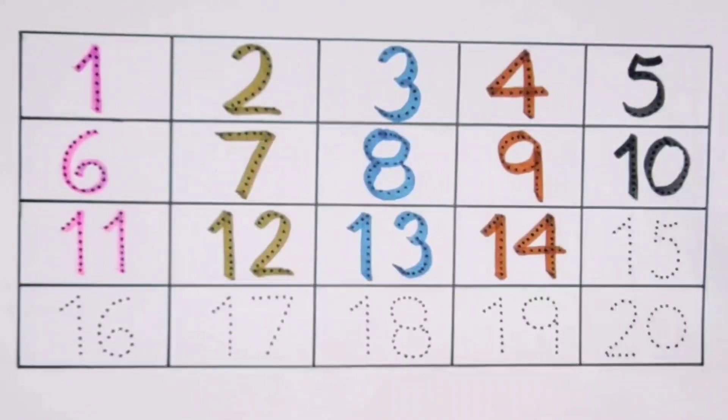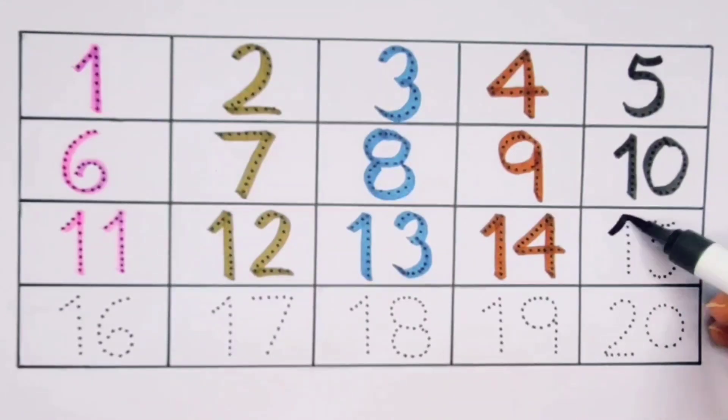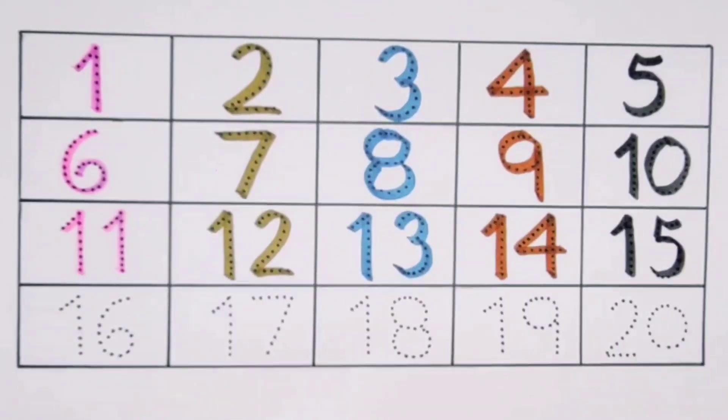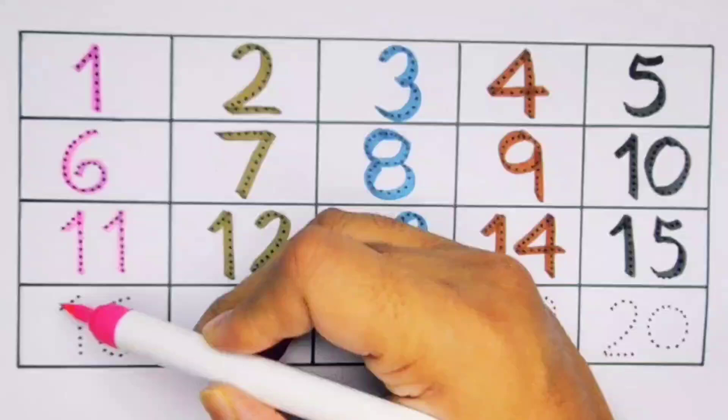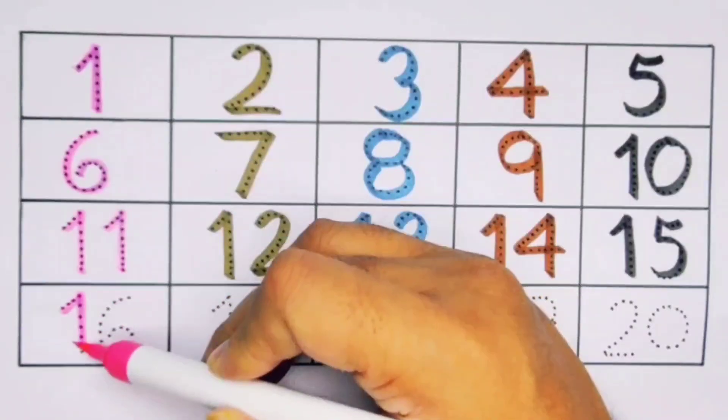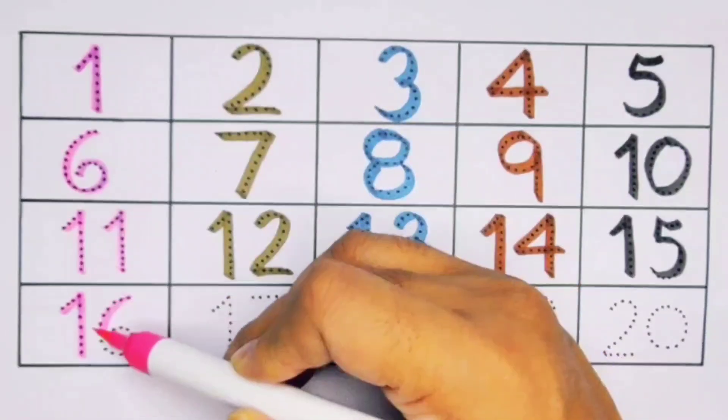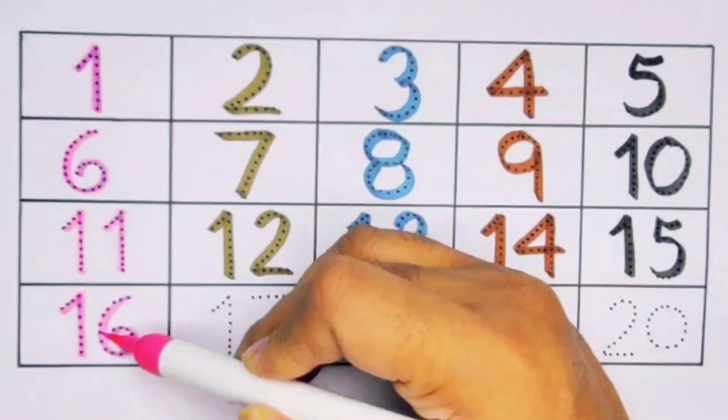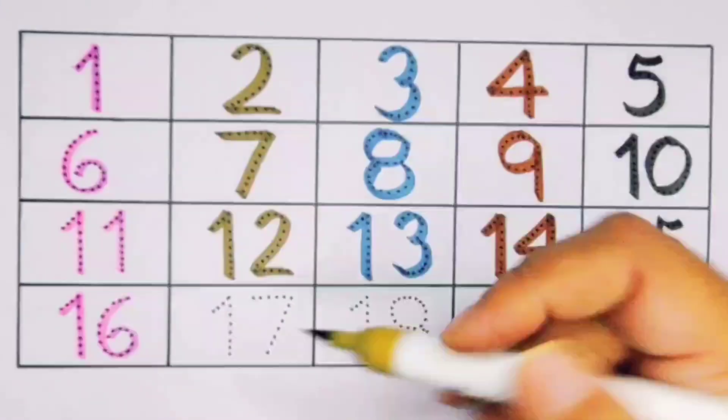Next, it's 15, 1-5, 15, number 15. Next, 16, 1-6, 16, number 16.